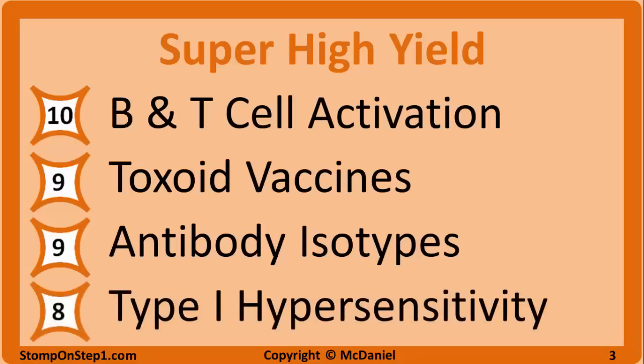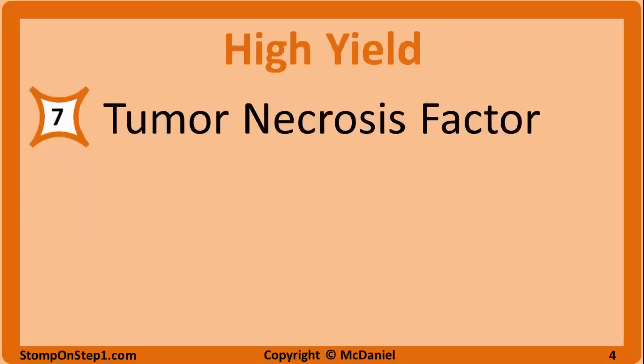With a high yield rating of 8, we have type 1 hypersensitivity. You want to know about the relationship to histamine and IgE, anaphylaxis and using EpiPens, and other types of atopic reactions like allergic rhinitis and atopic dermatitis. With a high yield rating of 7, we have tumor necrosis factor — how it's related to shock, and how TNF inhibitors can be used as a treatment for things like rheumatoid arthritis.